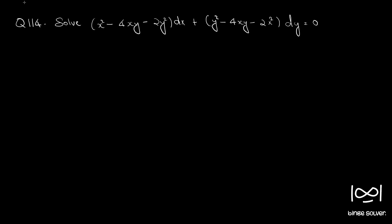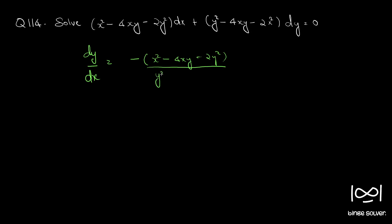Question number 114. Solve: (x² - 4xy - 2y²)dx + (y² - 4xy - 2x²)dy = 0. We will extract dy/dx from this equation. dy/dx is equal to minus (x² - 4xy - 2y²) divided by (y² - 4xy - 2x²).